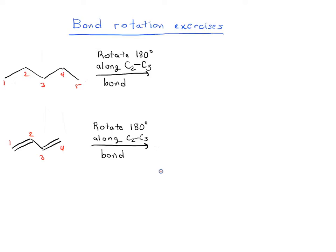Alright, why don't you try these bond rotation exercises. Take this molecule on the top and rotate 180 degrees along the C2-C3 bond, and then take this bottom molecule and rotate it 180 degrees along the C2-C3 bond. Work on it by yourself — press pause, and when you're ready press play.